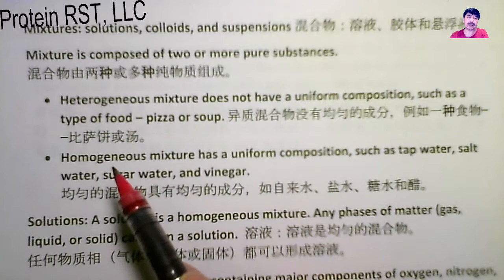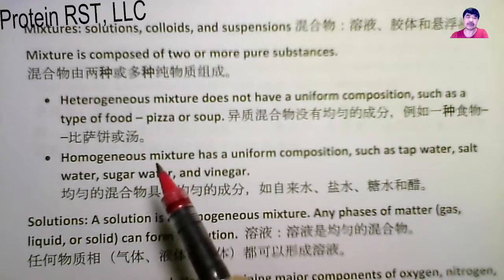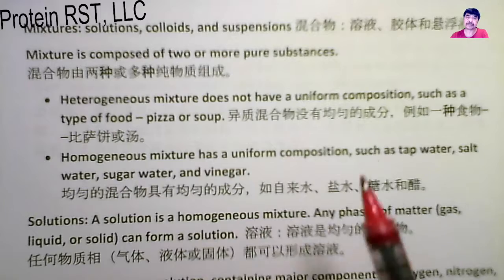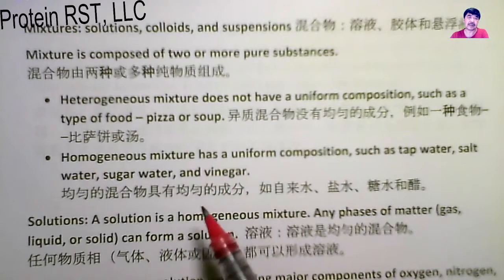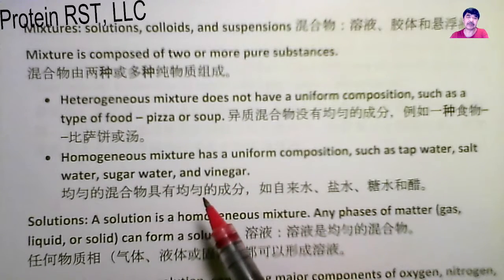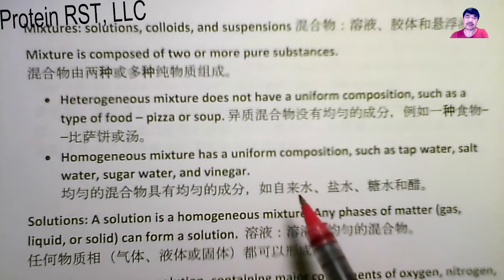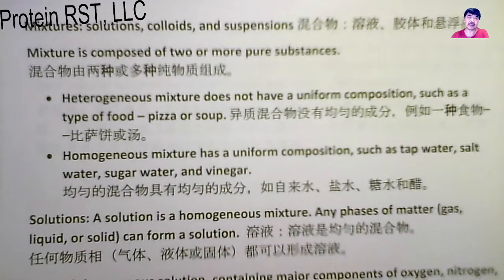The second type is called homogeneous mixture. Homogeneous mixture has a uniform composition, such as a type of water — salt water, sugar water, or vinegar. 均匀混合物，就有均匀的成分，比如说自来水、盐水、糖水和醋，都是homogeneous mixture.